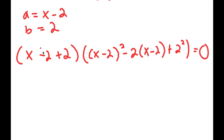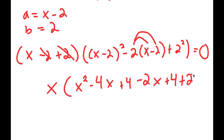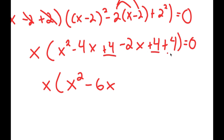We can simplify this. Negative 2 and positive 2 cancel out, so I get x times x minus 2 squared, which is x squared minus 4x plus 4. Then negative 2 times x minus 2 — distributing gives negative 2x plus 4. And finally, 2 squared is equal to 4. From here, we simplify inside the parentheses: x times x squared minus 4x plus 4 minus 2x plus 4 plus 4. This simplifies to x squared; negative 4x minus 2x is negative 6x; and 4 plus 4 plus 4 is plus 12.